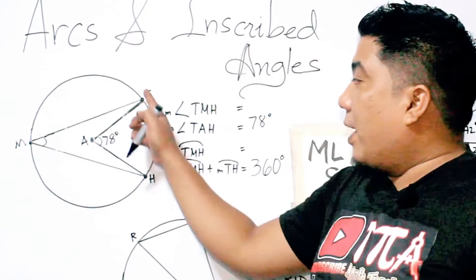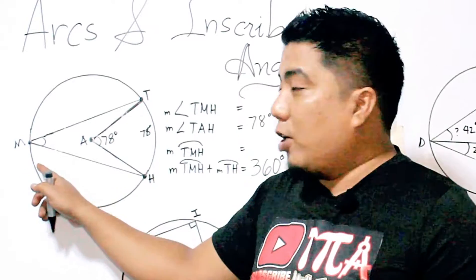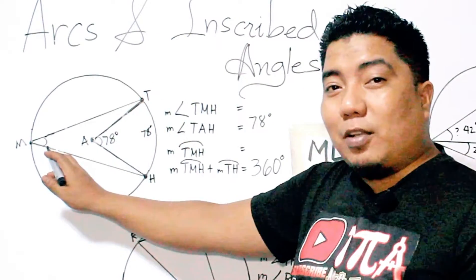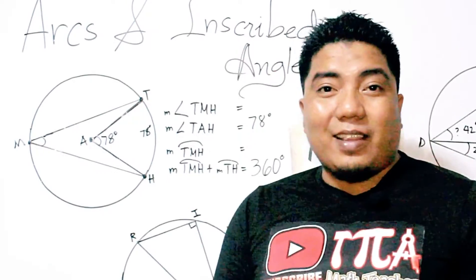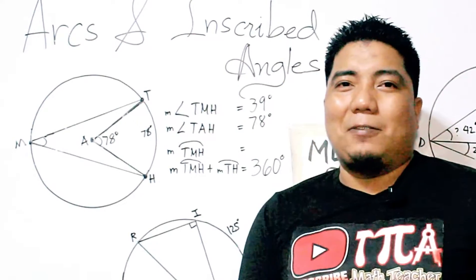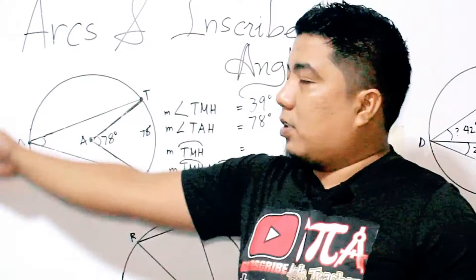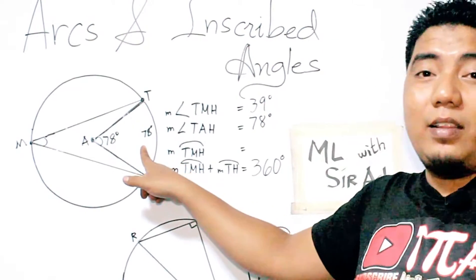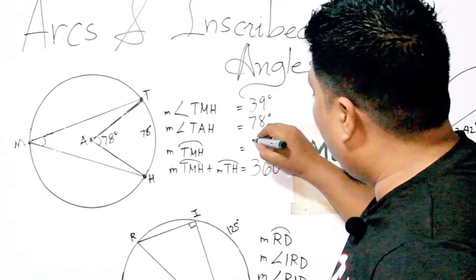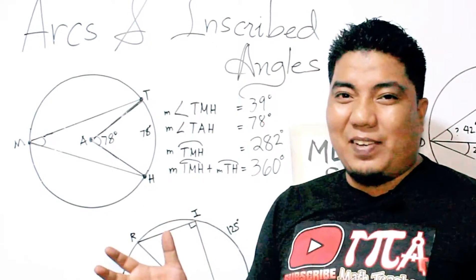For the inscribed angle TMH, remember from theorem one that the intercepted arc is twice the inscribed angle, so the inscribed angle is half the intercepted arc. Half of 78 is 39, so angle TMH equals 39 degrees. For arc TMH, since the full circle is 360 and arc TH is 78, we subtract: 360 minus 78 equals 282 degrees.